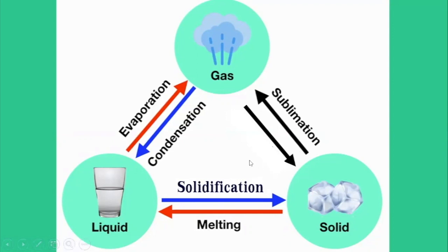And let's look at the reverse physical change from gas to solid. When some gases are cooled until a certain level, they may change their state from gas to solid directly without being a liquid first. We call this deposition. Repeat after me: deposition.